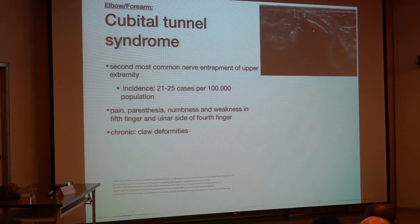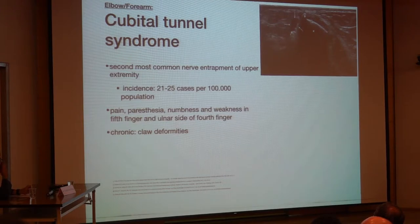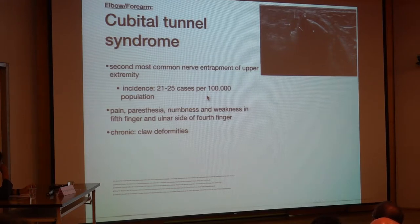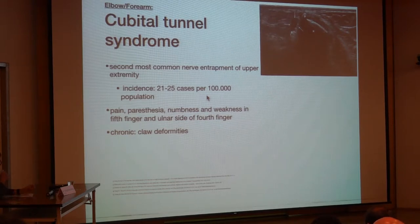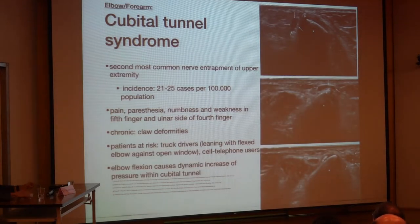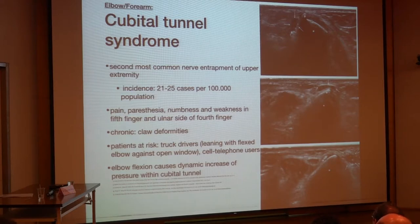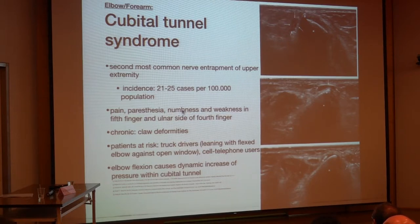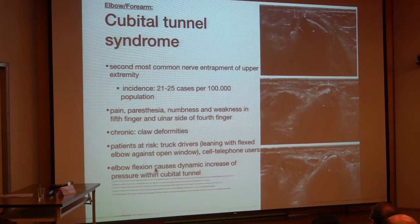Moving up to the elbow: the second most common nerve entrapment of the upper extremity is cubital tunnel syndrome, with an incidence of up to 25 cases per 100,000 in the population. It results in pain, paresthesia, numbness, and weakness in the fifth and fourth fingers, and chronically leads to claw deformities. Patients at risk include truck drivers with the arm in an open-window position with a flexed elbow, or cell phone users. By sonography, we can nicely see that elbow flexion increases pressure in the cubital tunnel.